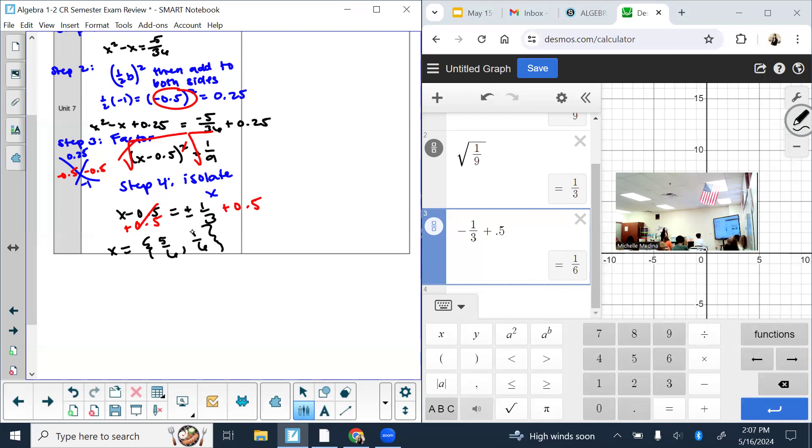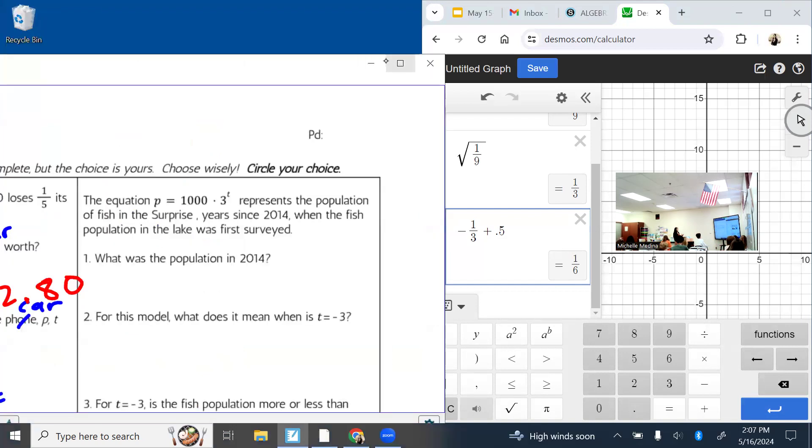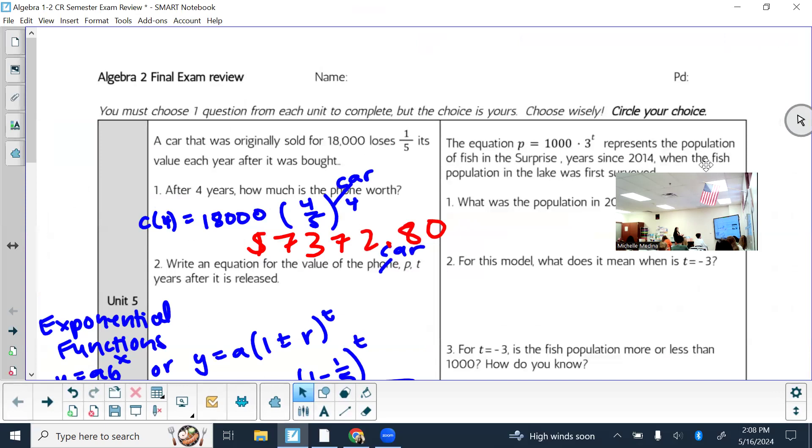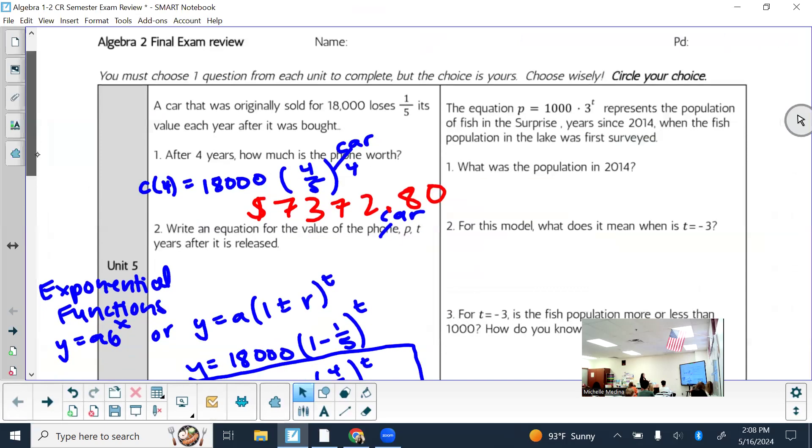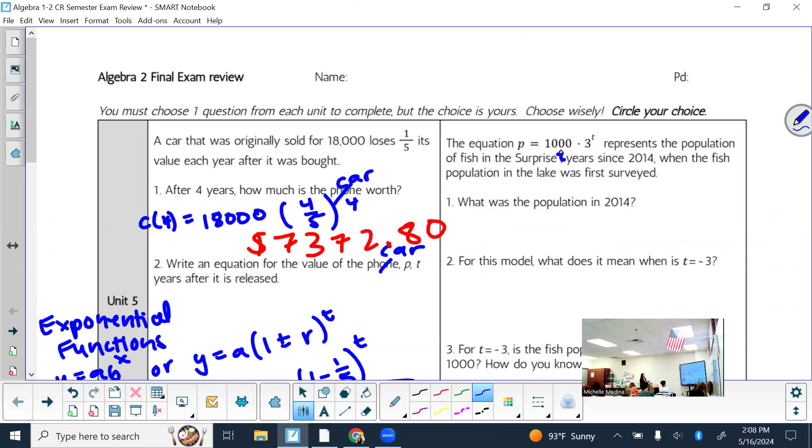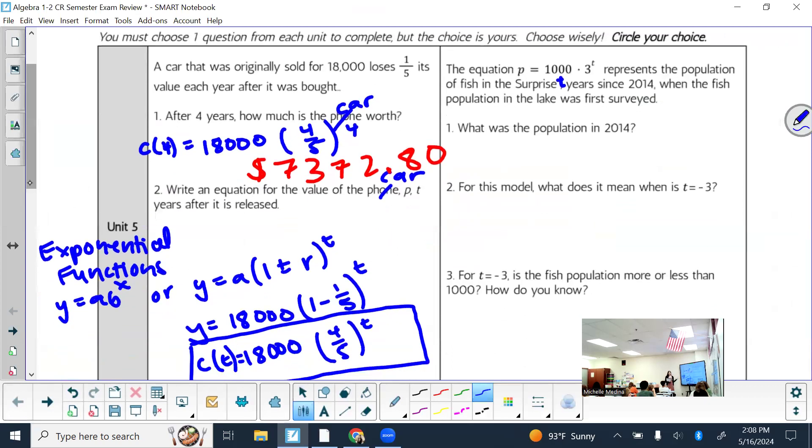Second question, Unit 5. The equation C equals 1,000 times 3 to the T represents the population of fish in Surprise Lake. What was the population in 2014 based on this equation? 1,000. So you could do that without doing any math, but of course you can always check with your math. We mentioned how it's A times B to the X, where A stands for initial amount. Since this is T here and since 2014, how many years after 2014 is 2014? Zero. So that would be already my answer, 1,000.